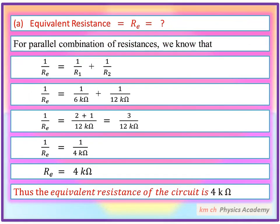سب سے پہلے Part A solve کرتے ہیں۔ Equivalent Resistance معلوم کرنی ہے۔ For parallel combination of resistances we know that اگر combination parallel ہو تو equivalent resistance معلوم کرنے کے لیے فارمولہ ہے: 1 over Req is equal to 1 over R1 plus 1 over R2. Values put کرتے ہیں: R1 کی value 6 kilo ohm اور R2 کی value 12 kilo ohm ہے۔